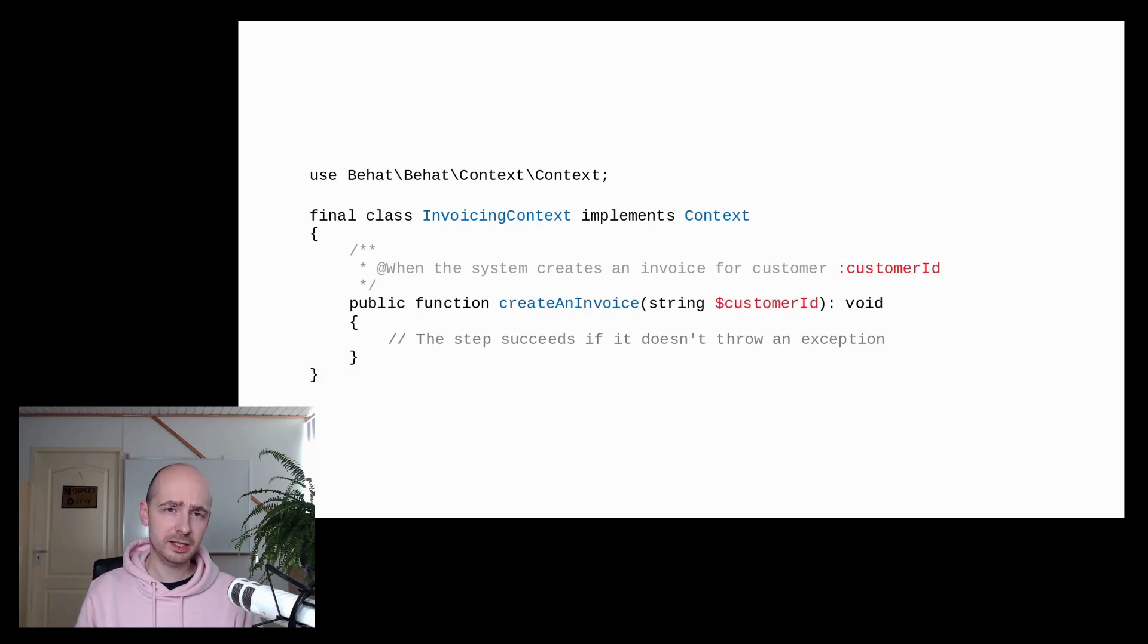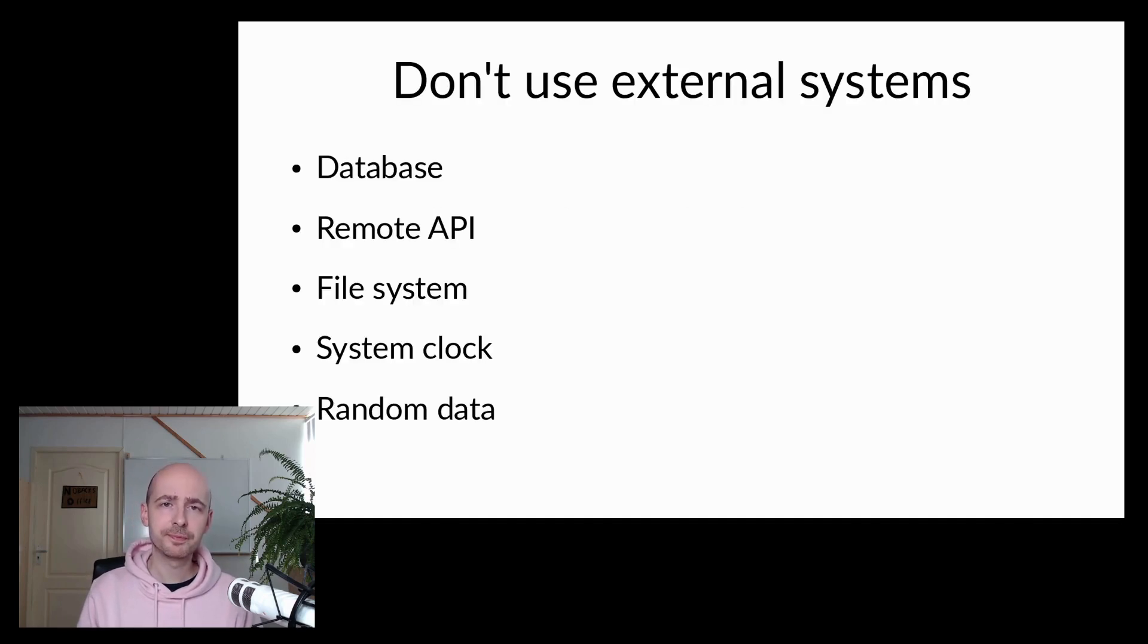For each of the given when and then steps in the scenario, we'd have to write a step definition in a so-called context class. BHAT will read the scenario and run the corresponding methods, replacing placeholders like customer ID with the actual values provided in the scenario. If a method throws an exception, BHAT considers the step to have failed. Otherwise, it will continue to run the next step in the scenario. A general rule for use case tests, just like with unit tests, is that we don't want to accidentally invoke external systems, like a database, a remote service, the file system, the clock, or the system's random device. Doing so would make our tests unstable because external systems may be slow, unpredictable, or simply broken at any time.